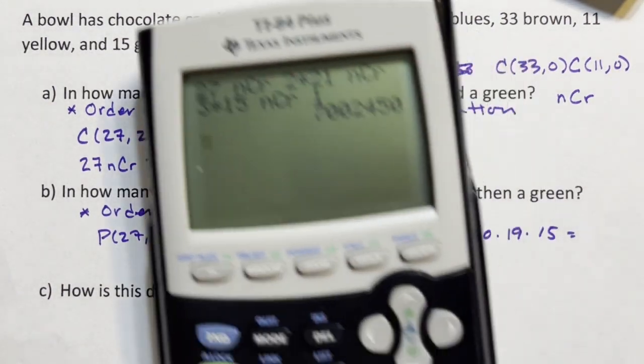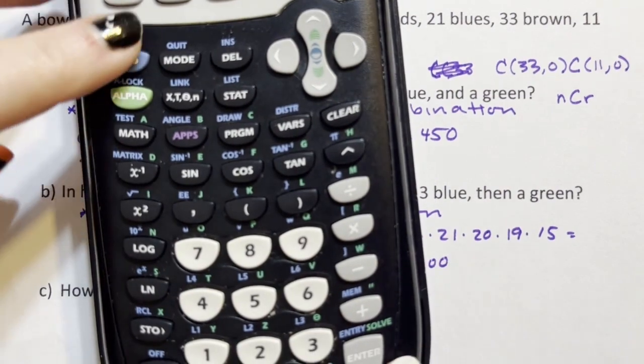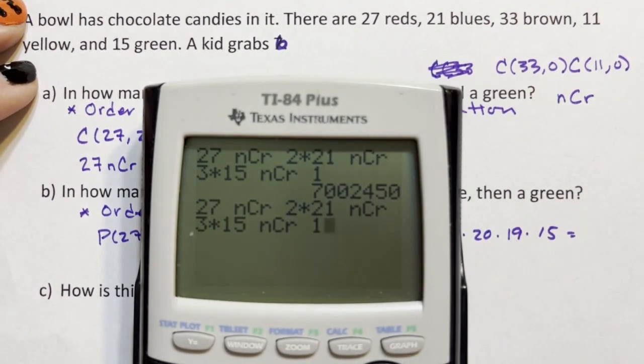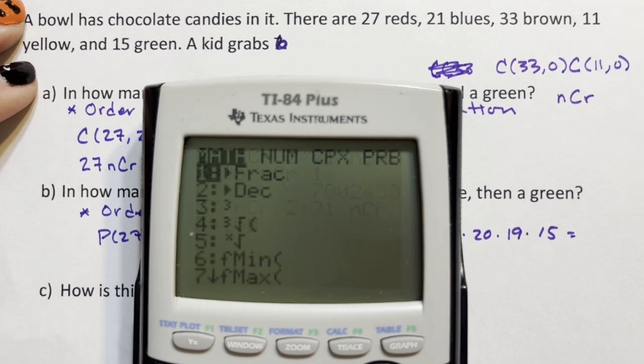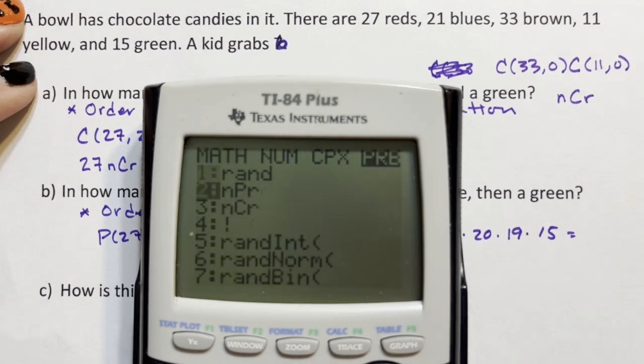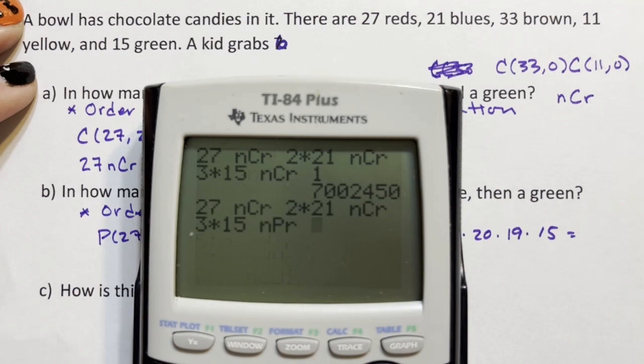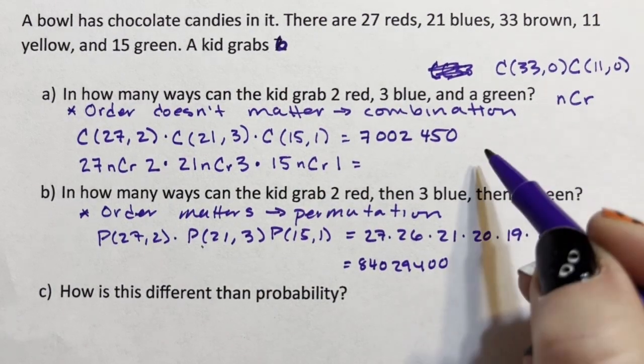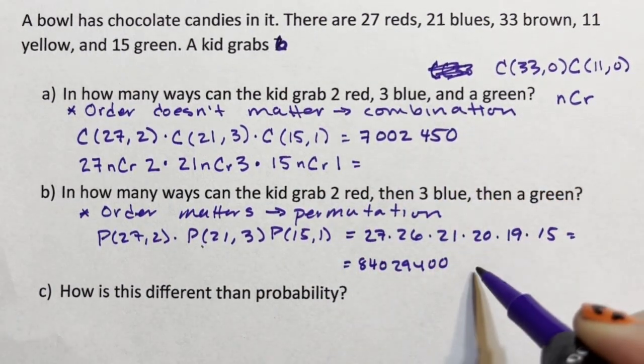For the graphing calculator to pull up your last you have to hit second enter, and that will pull up your last one if you want to just edit it. Delete, math, npr. So you can do it that way. Sometimes just retyping it in is easier. So if you notice when order matters, the number is bigger.